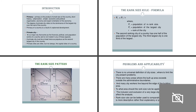The rank-size rule formula can be written in a form that makes it much clearer. It involves the population of the largest city and the rank of a city. The rank-size pattern has been defined in this way. However, there are certain problems in the applicability of this rule.